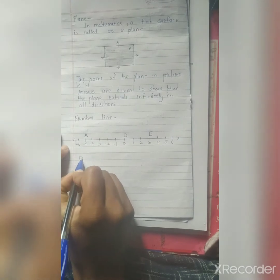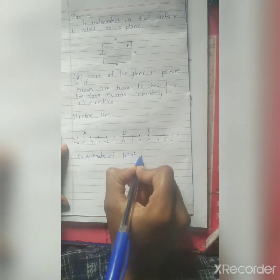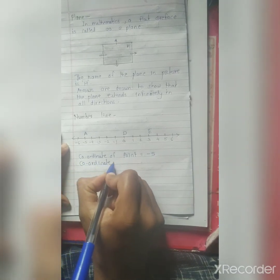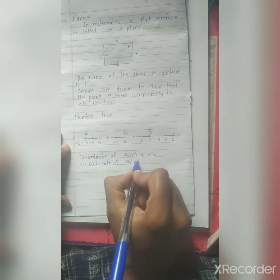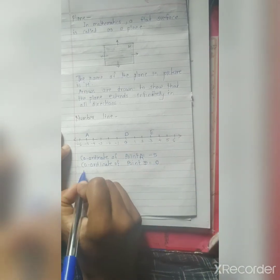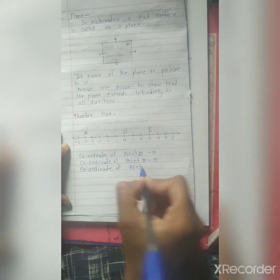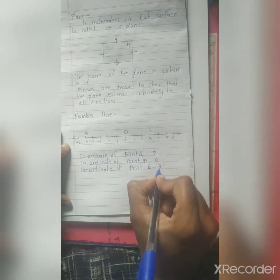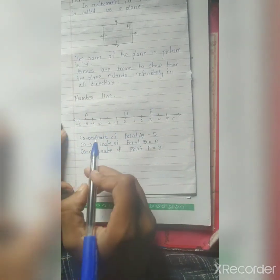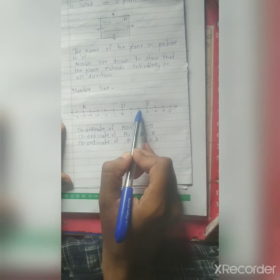If I want to write coordinate of point A, coordinate of point A is minus 5. Coordinate of point D is zero. Coordinate of point E is 3. In this way you can find out coordinates. Now we will see distance. Point E is 3 units away from point D. Therefore, the distance between that two points is 3.